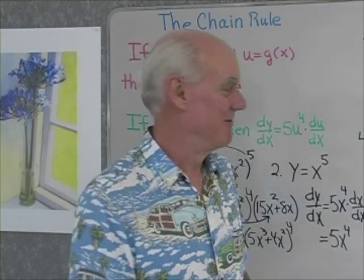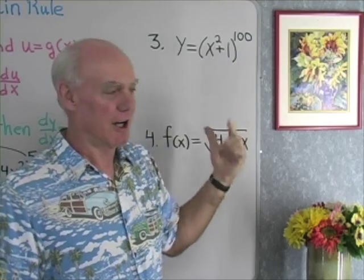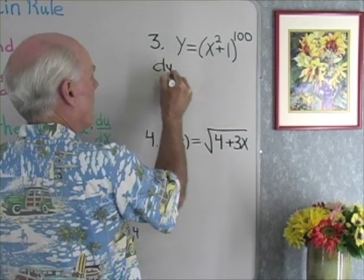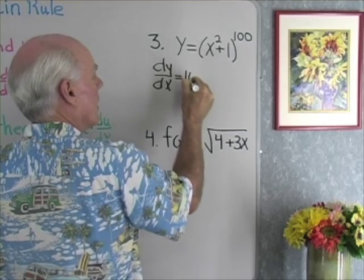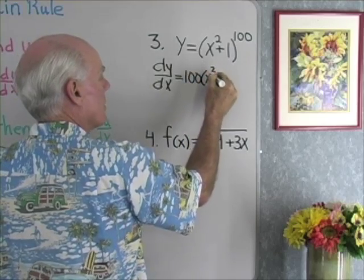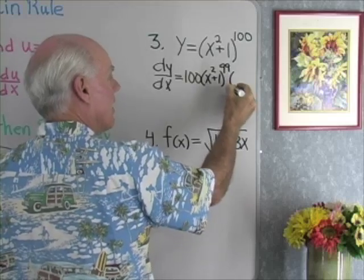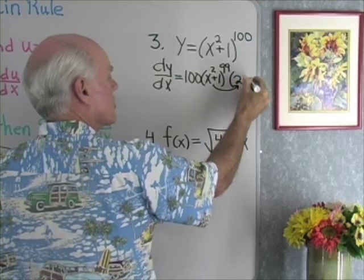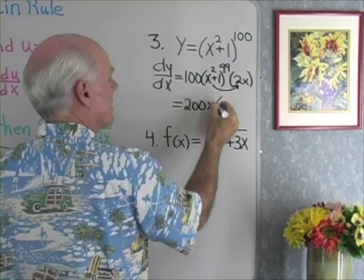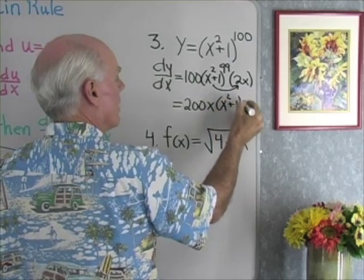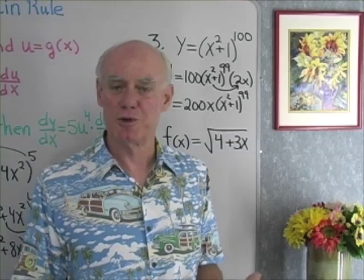Here I have y equals (x² + 1) to the 100th power. I can apply my chain rule: the derivative of y with respect to x is going to be that exponent, 100, times the base (x² + 1), don't change the base yet, to a power 1 less — 99 — then differentiate the base to get just 2x. So the answer is 200x times (x² + 1) to the 99th. We can differentiate some pretty complicated expressions with the chain rule, and all we end up doing is applying the rules we already have.